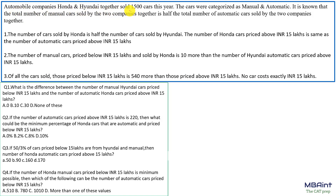Honda and Hyundai together sold 1500 cars altogether. The cars are categorized as manual and automatic. It is known that the total number of manual cars sold by both companies together is half the total number of automatic cars sold. Further, the number of cars sold by Honda is half the number sold by Hyundai.